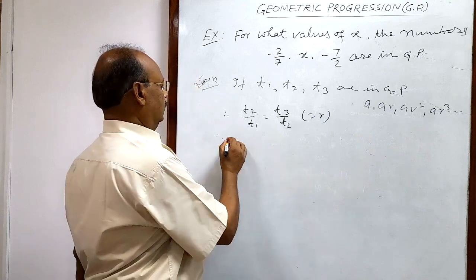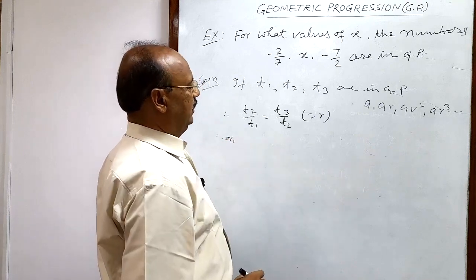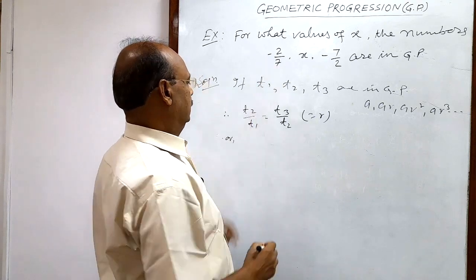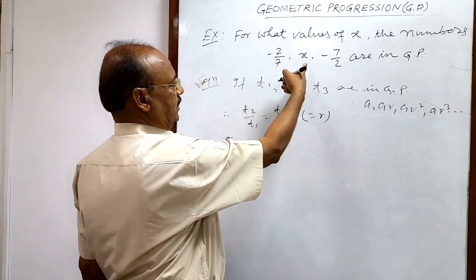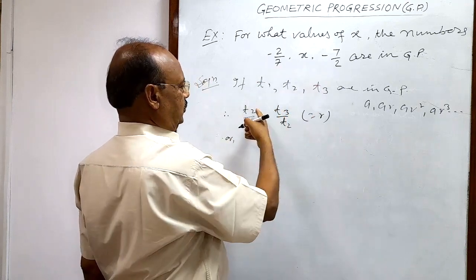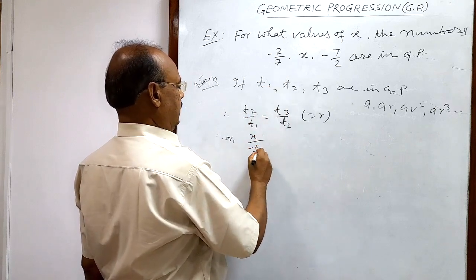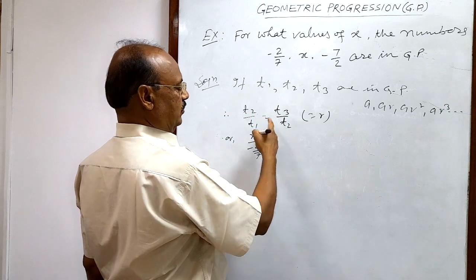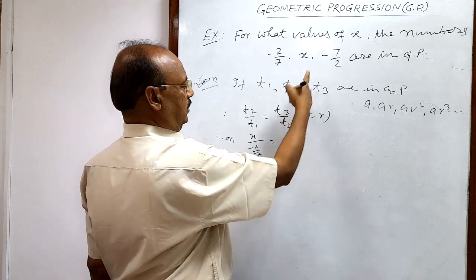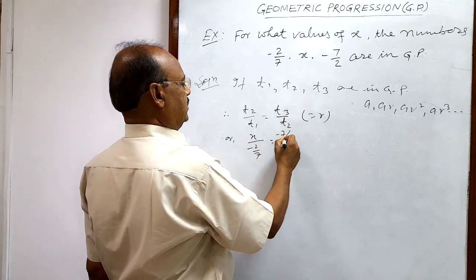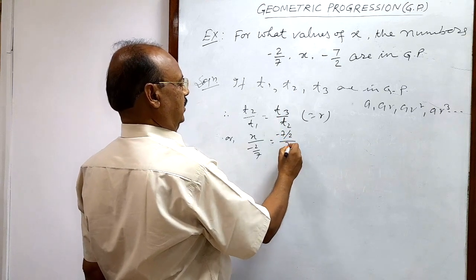Or we are having these values: this is T1, this is T3. So T2 upon T1 means x upon minus 2 by 7 is equal to T3 upon T2, which is minus 7 by 2 upon x.